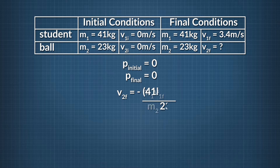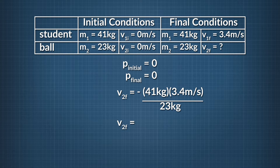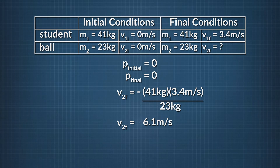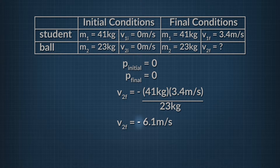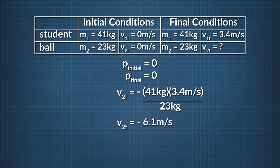Plugging our values into the equation and solving, we find that the final velocity of the ball must be 6.1 m/s, after rounding to two significant figures. The direction of the velocity vector would be in the opposite direction of the student that is gliding after throwing the ball.